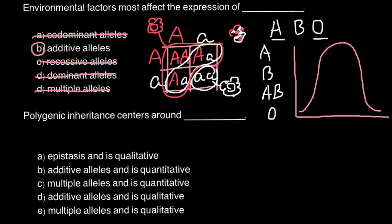Now the second question: polygenic inheritance centers around — and again there are five answers to choose from. We can cross out all answers that represent qualitative traits. Codominance, dominant alleles, and recessive alleles are all examples of qualitative traits — very discrete, either red or white with no other variance. We can also cross out answer E, multiple alleles, as it is qualitative.